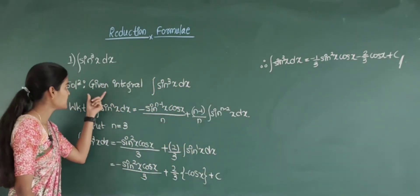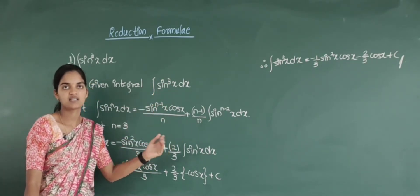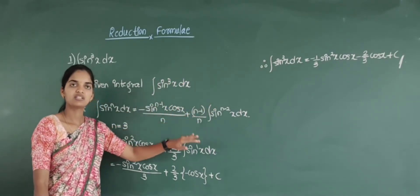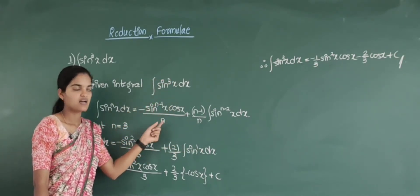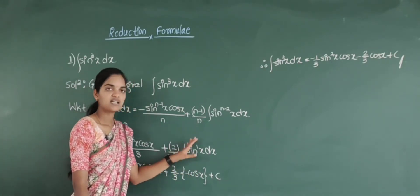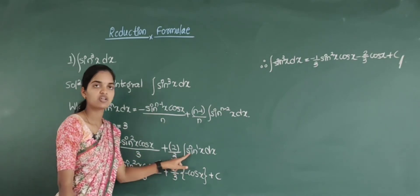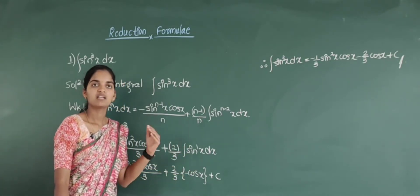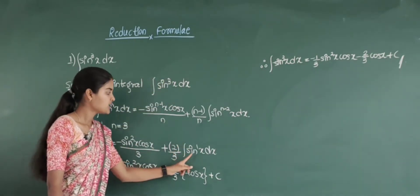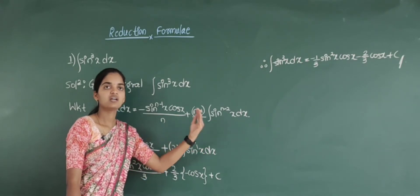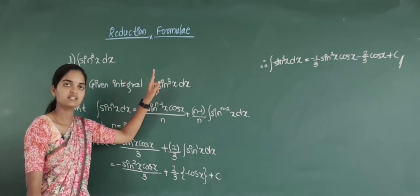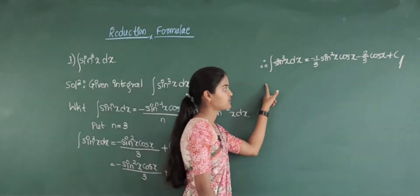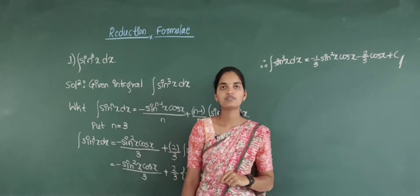This is the integration of sin cube x by using the reduction formulae. So first we have written the given integral, and the same procedure we have to apply for further examples. Write the given integral, then go for writing the formula, and after that whatever power is asked, substitute that as n. See here, with power 3 you directly get sin raised to 1, which you can integrate directly. But if the power is greater, you will again get integration of sin with a higher power — though lesser than the original. That time, apply the reduction formula again, and continue until you get the complete answer.